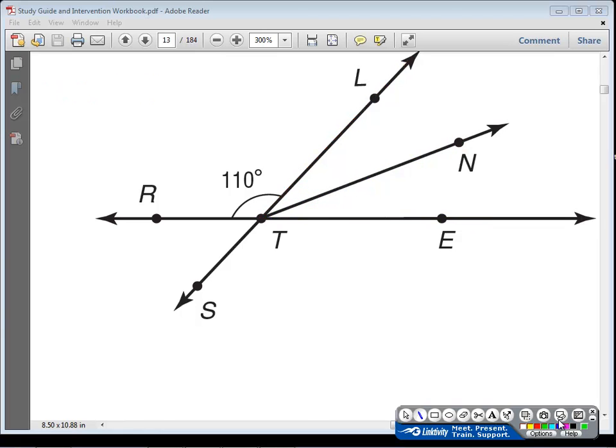Then we also have a straight angle, and a straight angle is one that is just a straight line, as you might have guessed, and how many degrees do you think a straight angle is? That's right. It's 180 degrees.